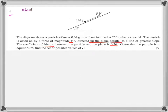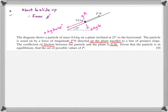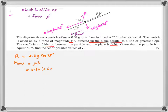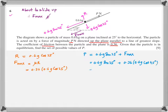Label all forces correctly. Case one — about to slide up, so friction acts down. R = 0.6g cos 25, and F_max = μR = 0.36 × 0.6g cos 25. The upward force equals the weight component plus frictional force: P = mg sin 25 + F_max. Think in words first, then write in math. That gives the maximum value of P. Case two — about to slide down, so friction acts up. Everything else is the same except F_max is now upward, so P + F_max = mg sin 25, giving the minimum value of P.